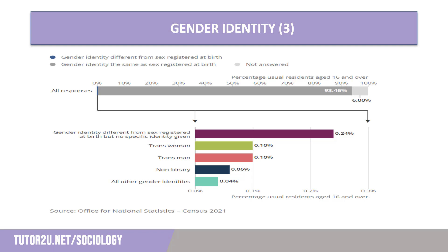We can see this summarised in the table on the screen, taken from the Office for National Statistics. The overwhelming majority identify as the same gender they were registered with at birth. However, we need to question why almost 6% of the population did not respond. Again, if one person completes the census for the family, does this impact on the validity of the responses?